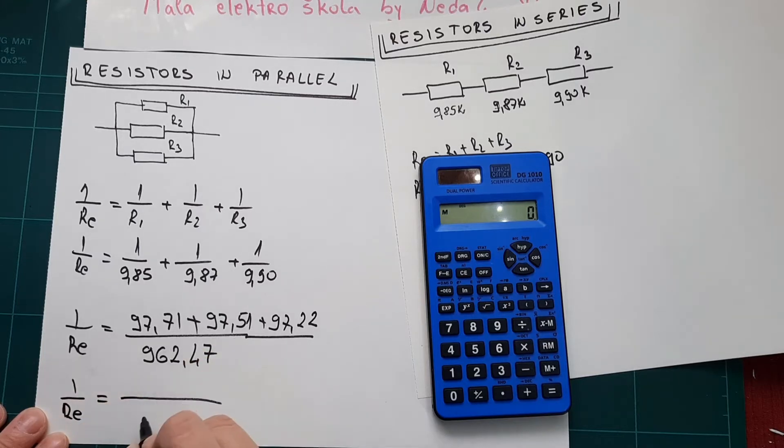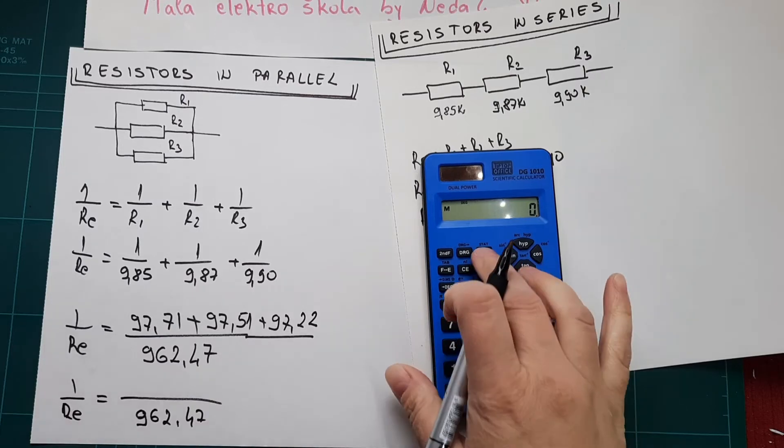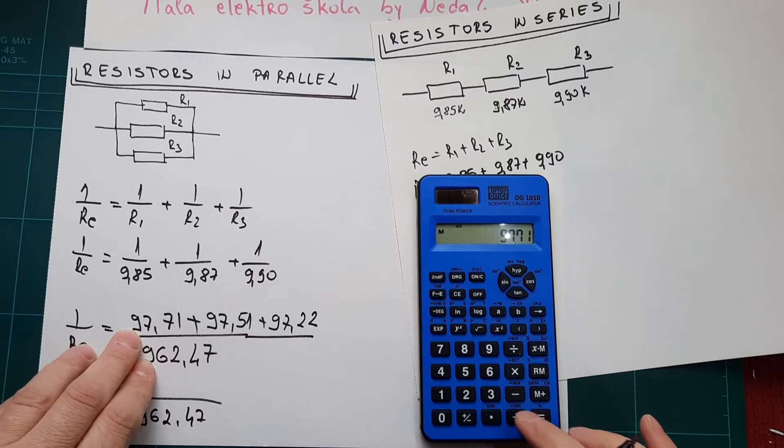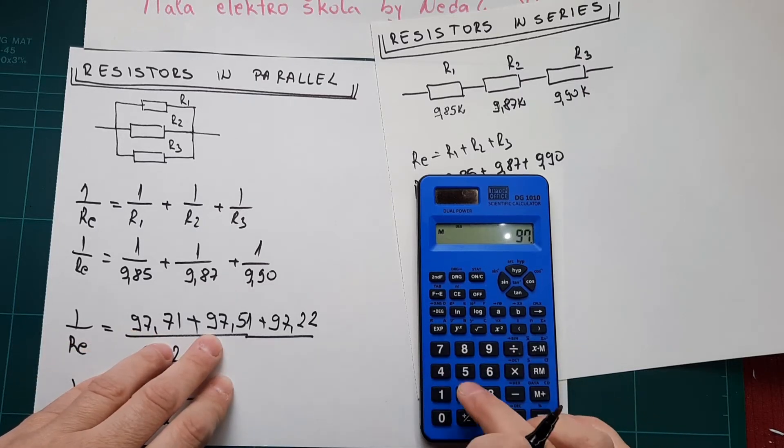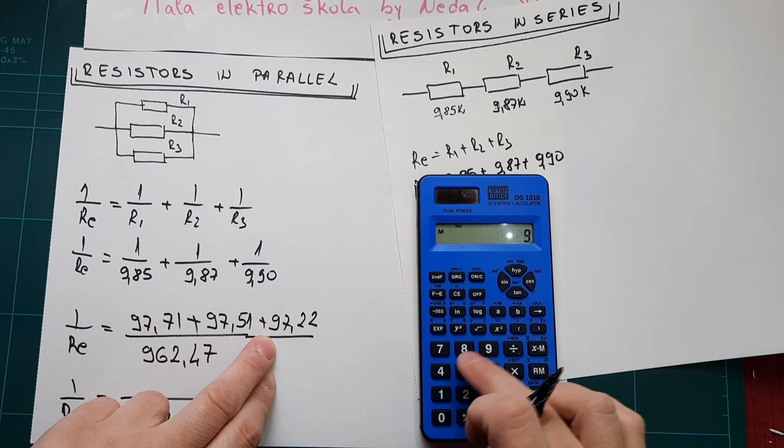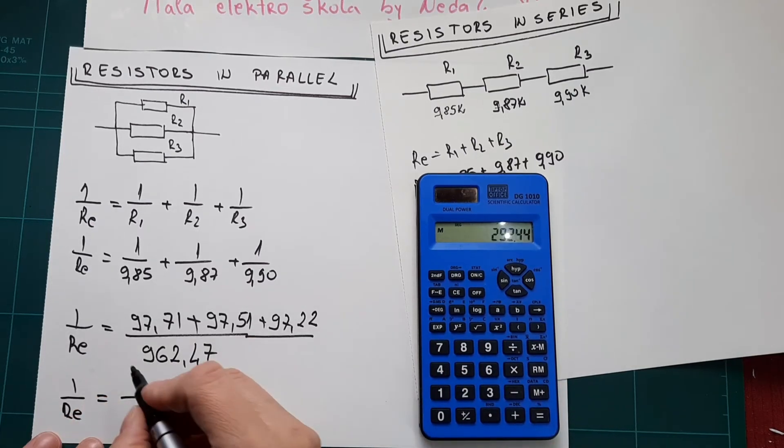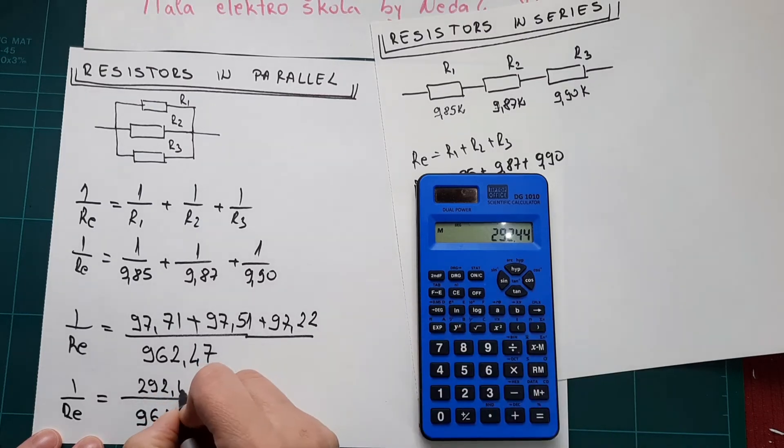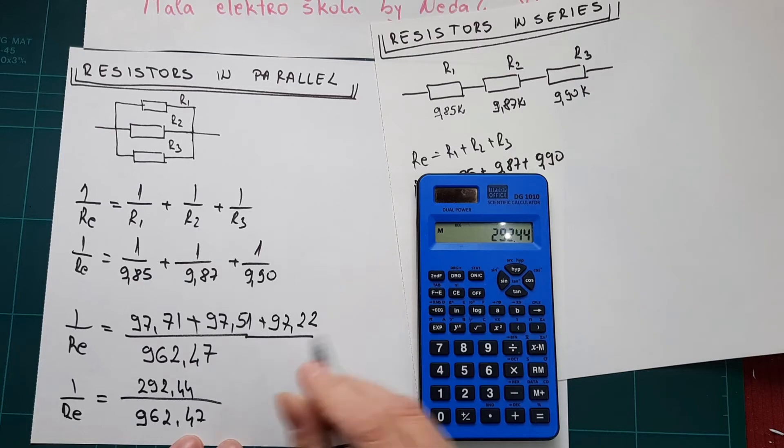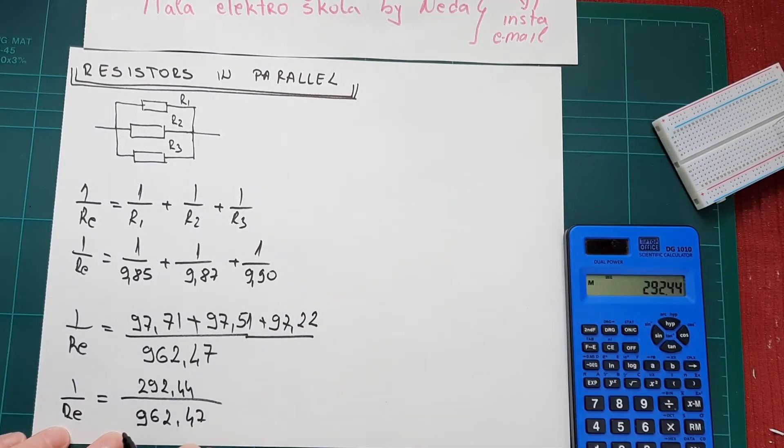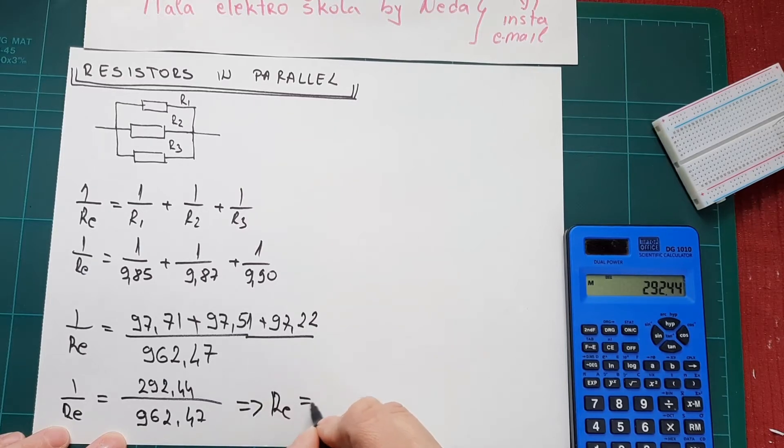97.71 plus 97.51 plus 97.22. We got 292.44. So from here we got that R equal is calculated next.